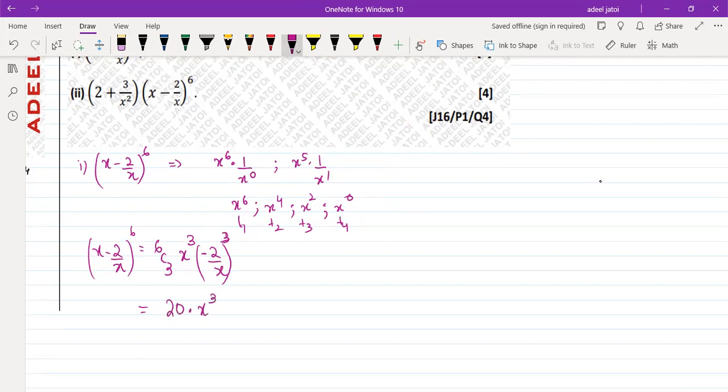x cube and what do we have here is minus 8 upon x cube. So x cube and x cube is cancelled. So the answer for this is minus 160, which is coefficient for x square, which is independent value.